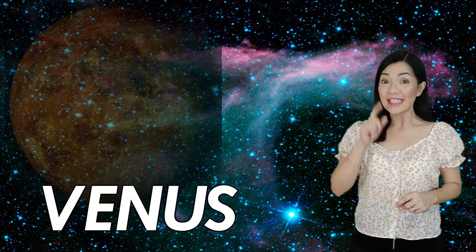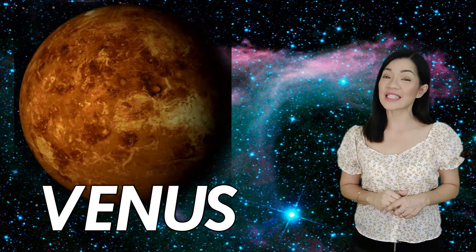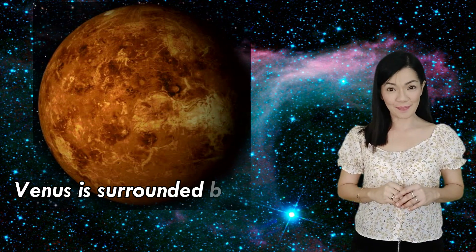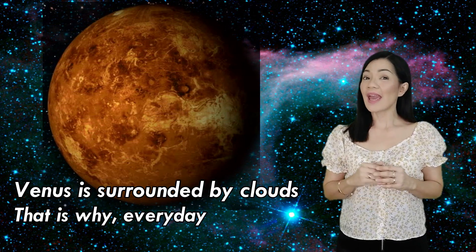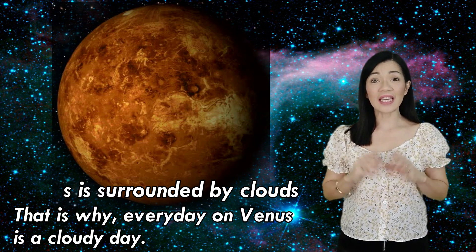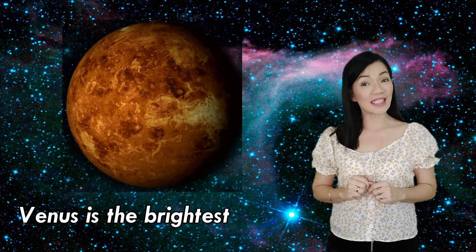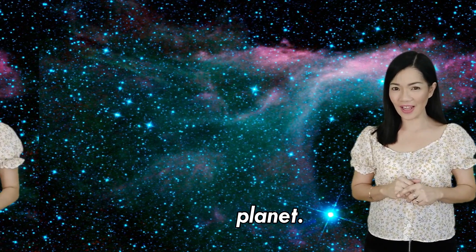The next planet or planet number two is Venus. Yes, Venus is the second planet from the sun. Venus is surrounded by clouds. That is why every day on Venus is a cloudy day. And the clouds are yellow. Because Venus is surrounded by clouds, it reflects maximum sunlight. So, Venus is the brightest planet of all.